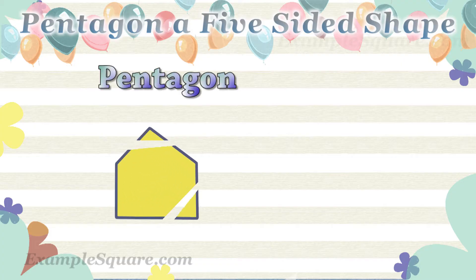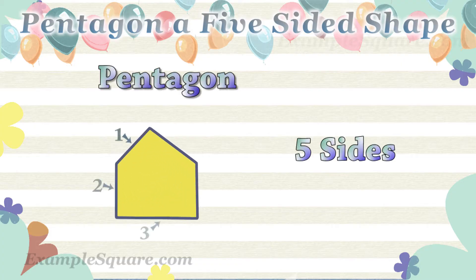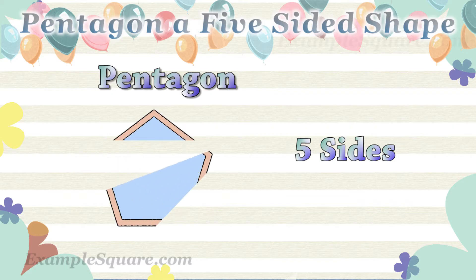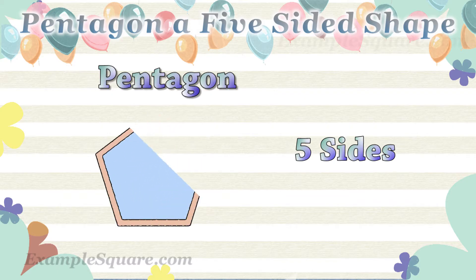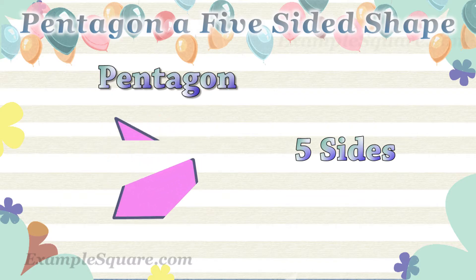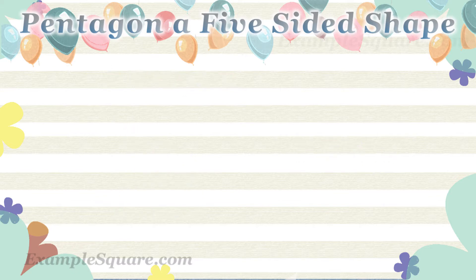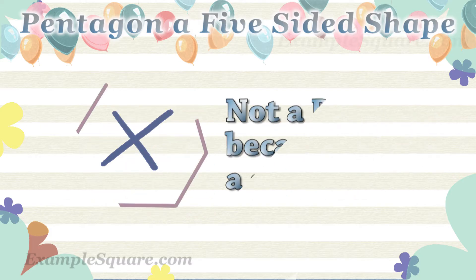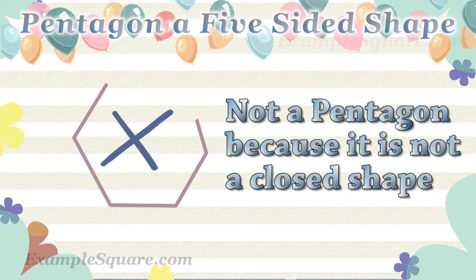These are some examples of pentagons. All five sides of the pentagon are straight sides; the sides cannot be curved and the shape should be closed. This is not a pentagon because one of the sides is curved. This is not a pentagon because it is not a closed shape.